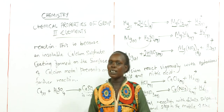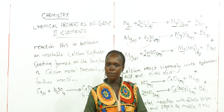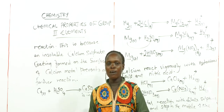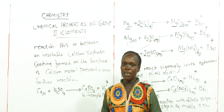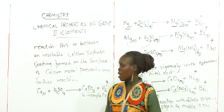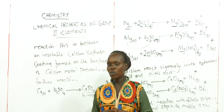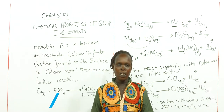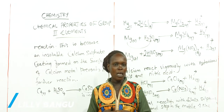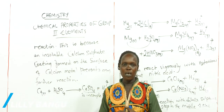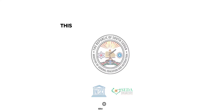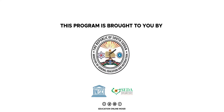So learners, we have learned that group 2 elements are reactive, and reactivity increases as we go down the group — moving upwards, reactivity decreases. We have learned the reactions of group 2 with water, chlorine, dilute acid, and oxygen, represented by calcium and magnesium. With that, we have come to the end of this lesson. Thank you very much for listening. Bye.